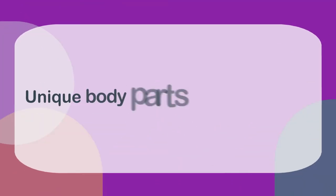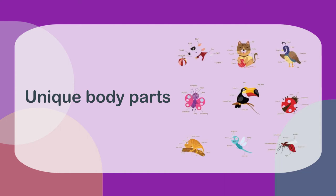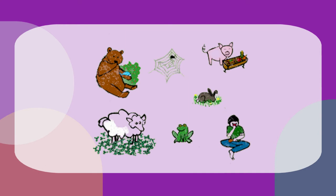Now we will learn about some more features of animals which make them different from each other — unique body parts. Different animals have different body parts which are unique to them. These specific body parts help them catch and eat food, and move around.